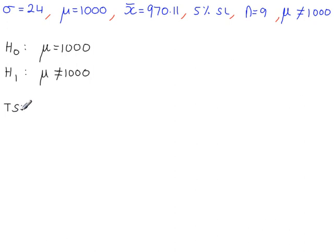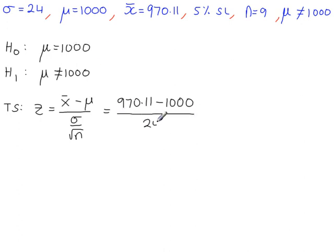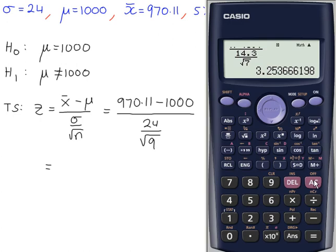The test statistic is equal to, and this formula is on page 12 in the formula book. Make sure you get these the right way around. That's the sample mean, 970.11. That's the population mean, which is 1000. Divided by sigma over root n. Equal to, fractions, 970.11 minus 1000 over fraction again 24 over root 9. Minus 3.74.